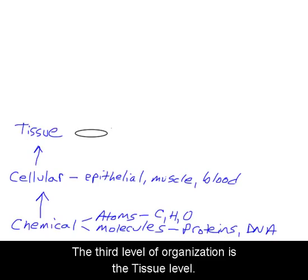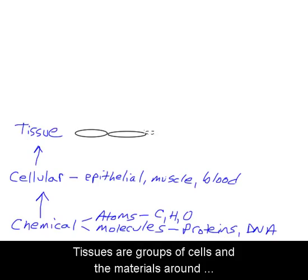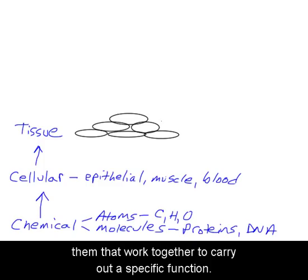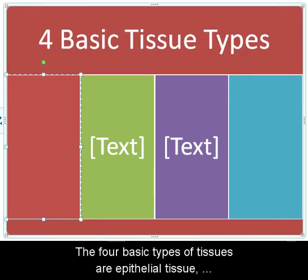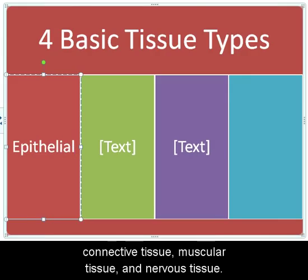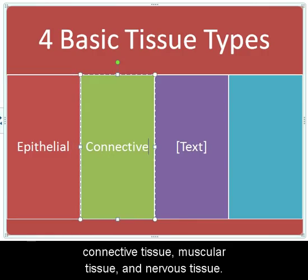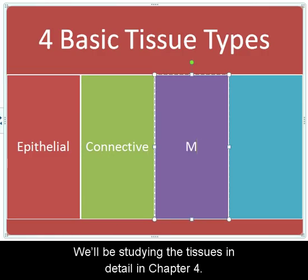The third level of organization is the tissue level. Tissues are groups of cells and the materials around them that work together to carry out a specific function. The four basic types of tissues are epithelial tissue, connective tissue, muscular tissue, and nervous tissue. We will be studying the tissues in detail in Chapter 4.